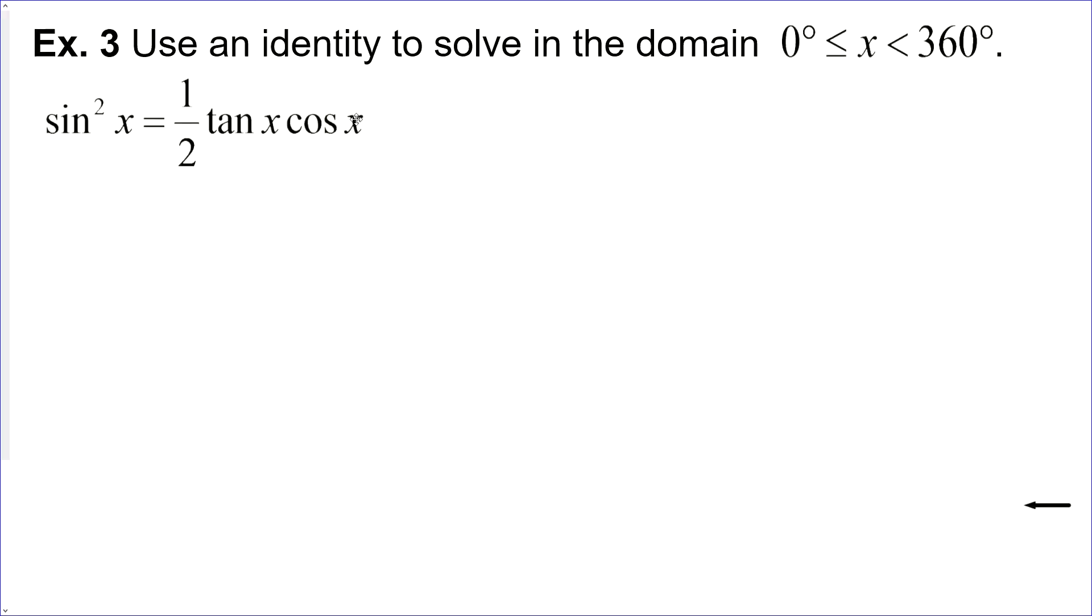Use an identity to solve this equation. And this time we're actually working in degrees. So the first one we see that there is sine and tan and cos and we probably don't want all of those things. We probably want to break it down into one trigonometric function if possible. So let's break tan down first and see what happens. Tan x is equal to sine x over cos x.